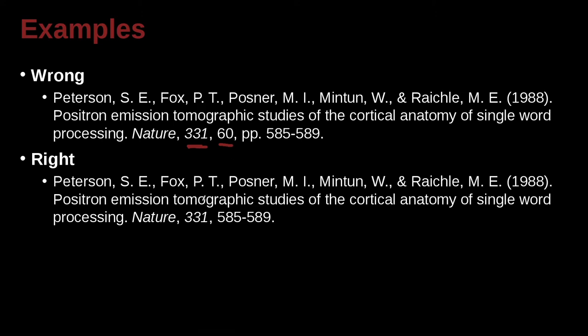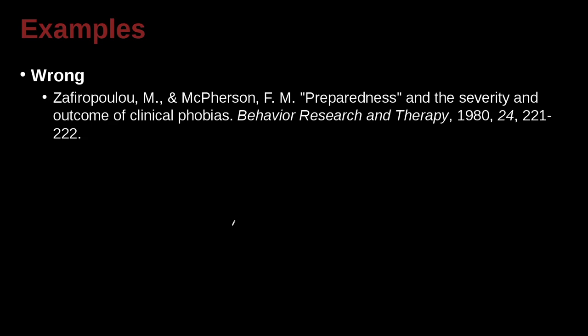If it is an issue number — let's say volume and then issue — if you have a volume and issue, the way you would write that is: 331, then parentheses (60). That's how you would write volume and issue number together for that article in that journal.